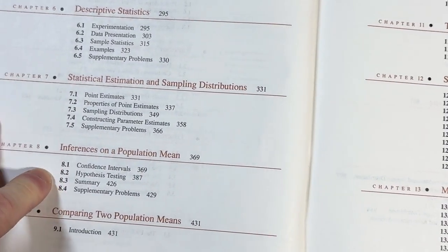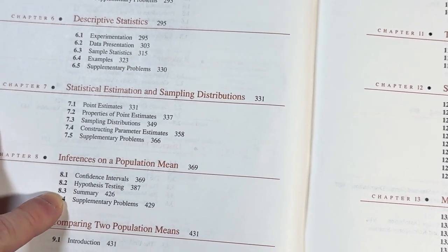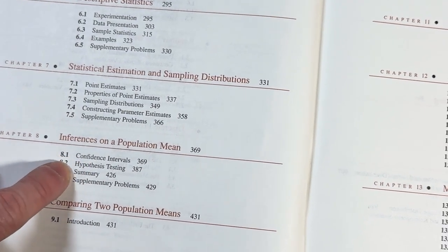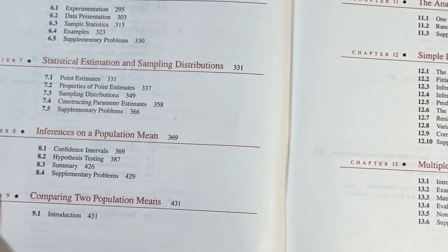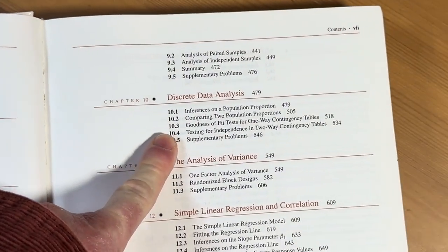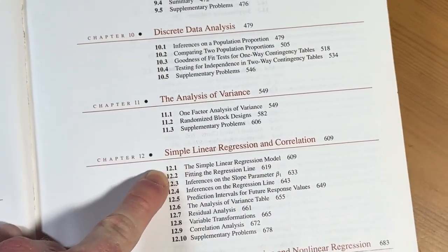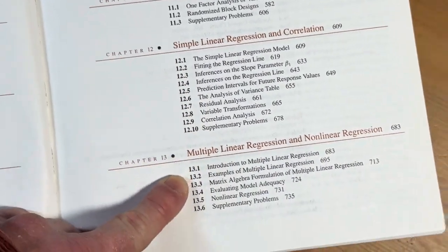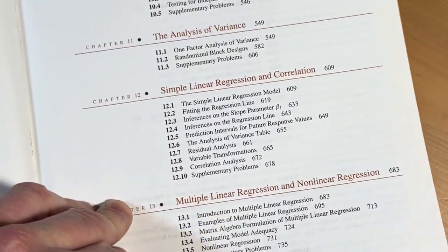This is really important. Inferences on population mean, so this is hypothesis testing. And then confidence intervals through useful estimation. Comparing two population means, discrete data analysis, analysis of variance.